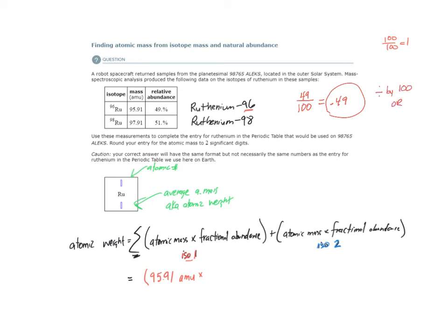or move the decimal two times to the left. So we take this decimal place and move it two times to the left we get 0.49. That's the same as dividing by 100. So the fractional abundance for isotope 1 is 0.49. And there are no units associated with that.